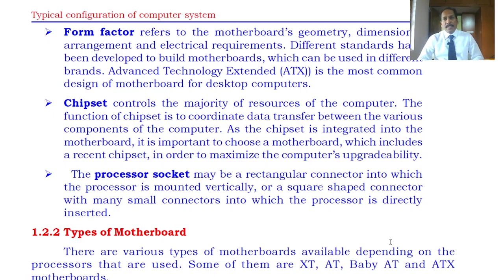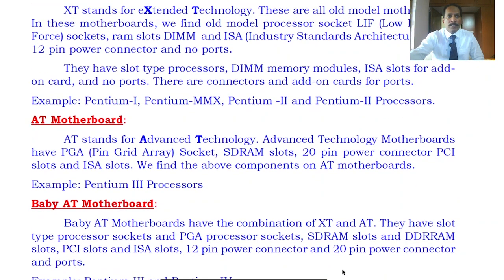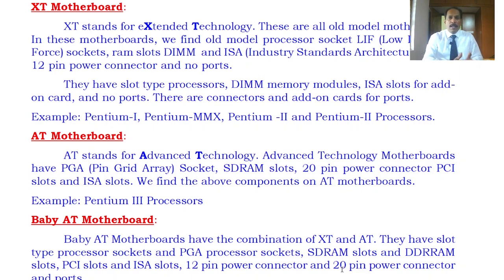The major components we will discuss one by one. Motherboards are classified or characterized by three factors: one is the form factor, the second is the chipset, and the third is the processor socket. There are different types of motherboard. The first one is the XT motherboard, then we have the AT motherboard, the Baby AT motherboard, and one more is the ATX motherboard.